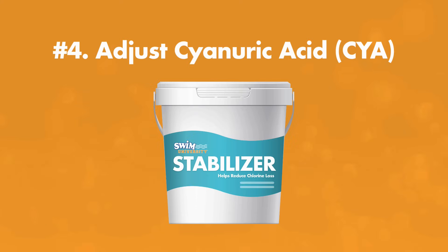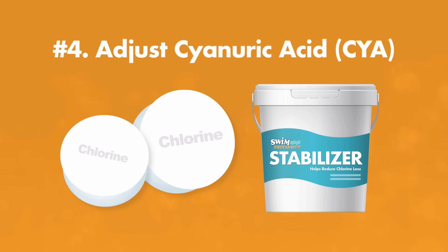Next, adjust your cyanuric acid or CYA levels if needed. CYA helps stabilize your sanitizer. Remember that if you add a stabilized chlorine product to your water, like dichlor or trichlor tablets or granules, you've already added cyanuric acid, so your CYA levels may be fine at this point.